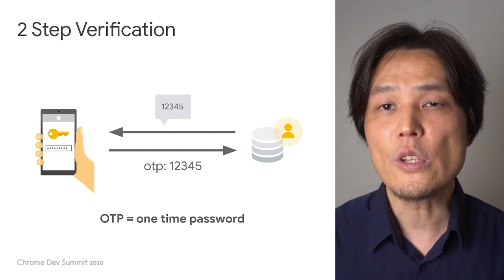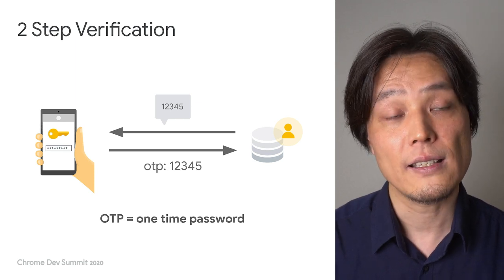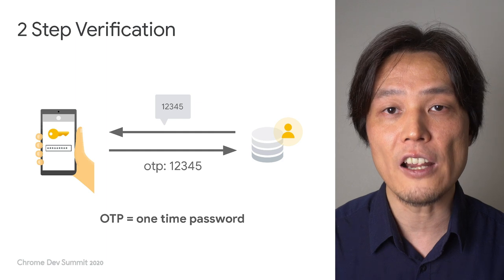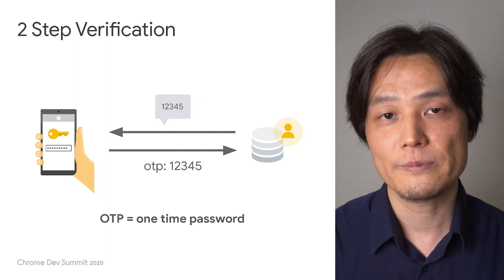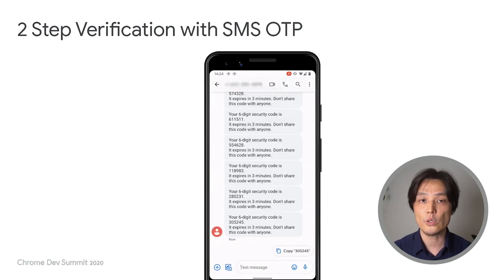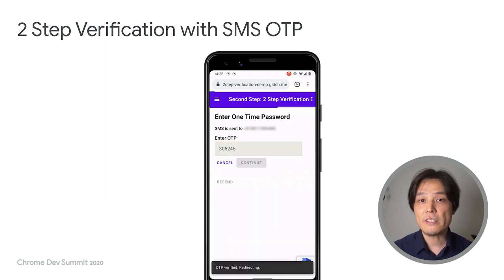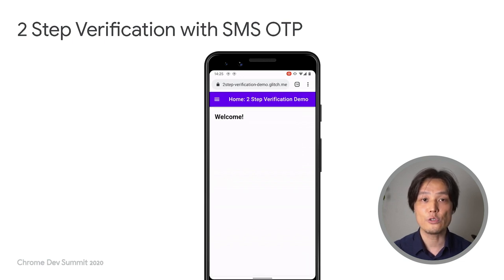The user can prove their ownership of a phone number by entering an OTP delivered via SMS. Because phone numbers are universally unique, an SMS message can be used to prove a user is who they say they are. Let me show you how it works. In a typical two-step verification, a user enters a username and a password, and then the website asks for an OTP. Because the user has already registered their phone number, the service sends an SMS with an OTP. The user opens the SMS app, copies or remembers the OTP, and enters it in the form. The website then examines the submitted OTP and verifies that user.